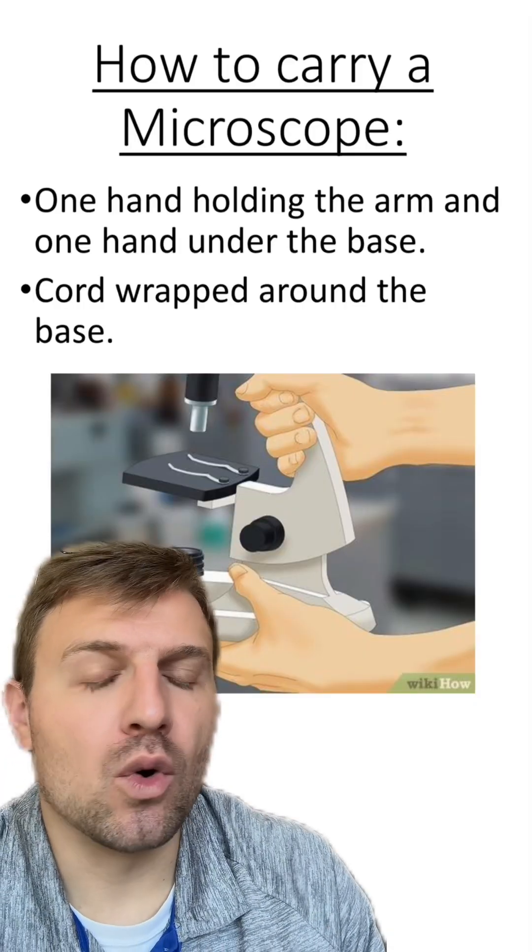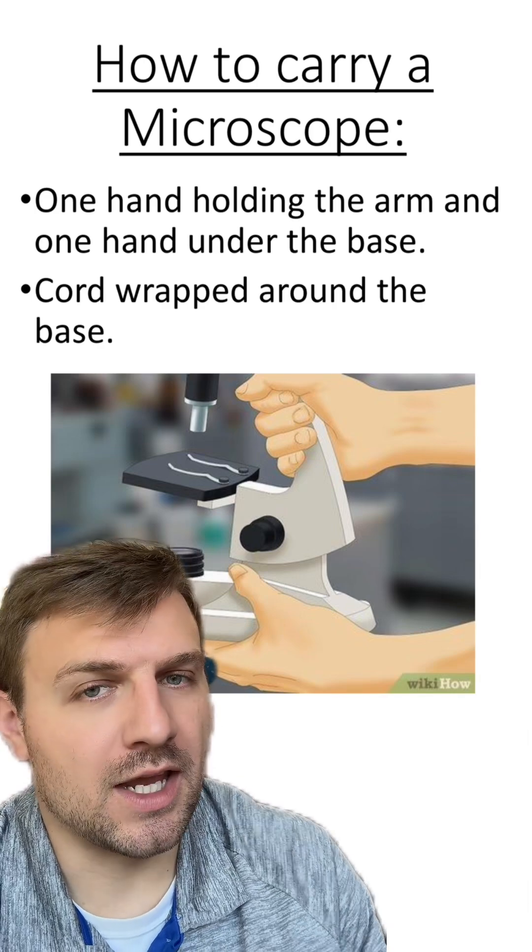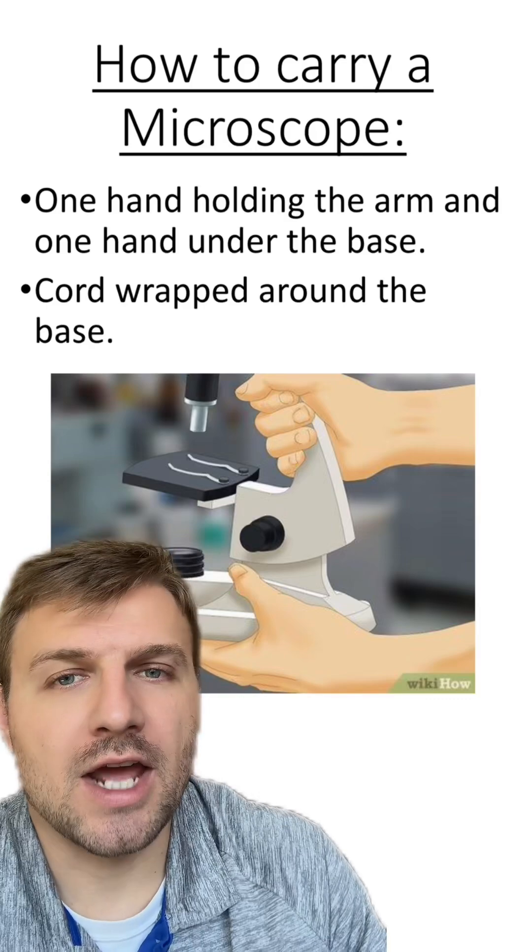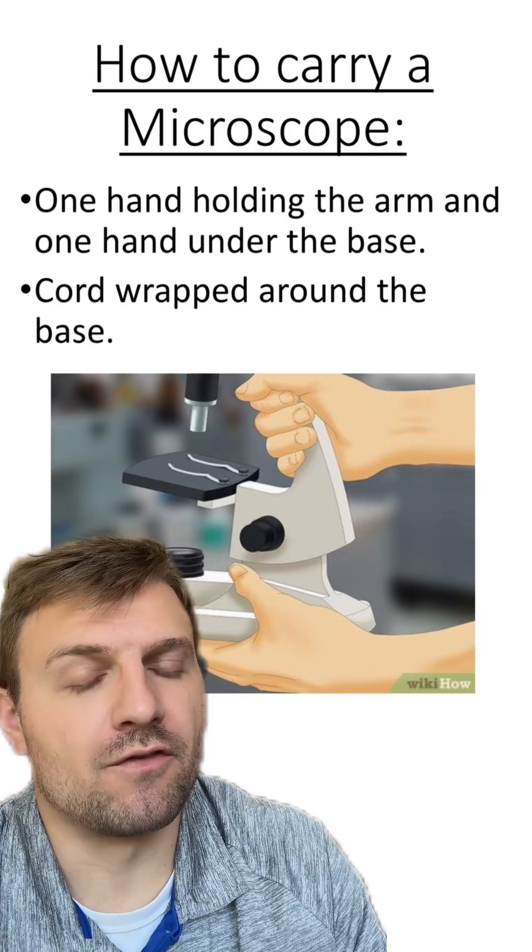When carrying a microscope, you hold one hand on the arm with one hand under the base. You also should have the cord wrapped around the base so you don't fall and trip on it.